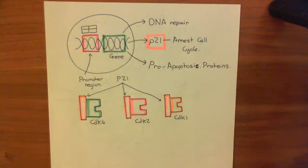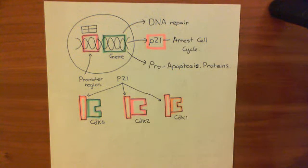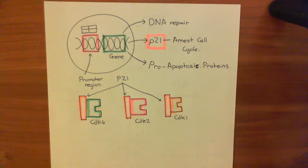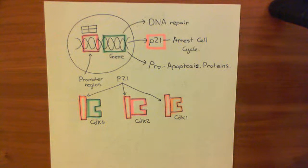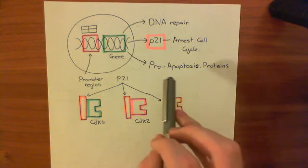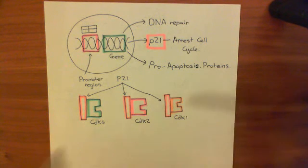We want to try and repair the damage that has occurred to the DNA. Secondly, P53 is going to increase the expression of the P21 protein, which arrests the cell cycle — and we're going to discuss in this video in more detail how it arrests the cell cycle. Thirdly, if P53 levels are very high for sustained periods of time, it starts to increase the expression of pro-apoptotic proteins, which are going to drive the cell to commit suicide.